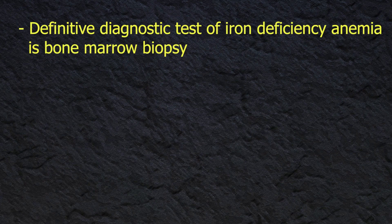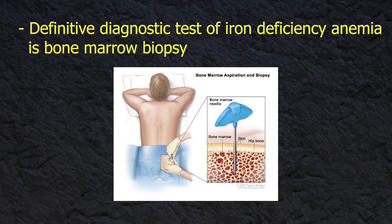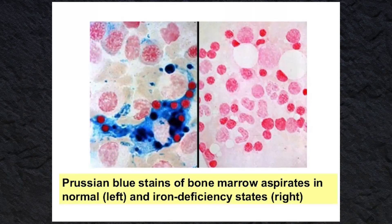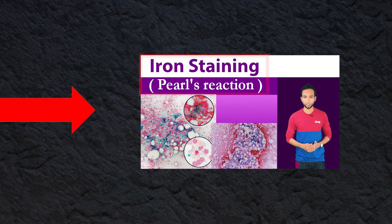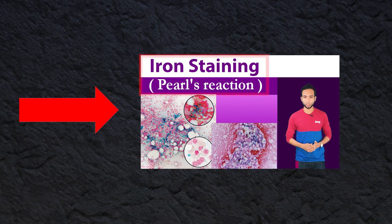A rarely used but definitive diagnostic test for iron deficiency anemia is bone marrow biopsy. Bone marrow iron is assessed under Prussian blue stain, showing depleted iron stores with micronormoblastic erythropoiesis. Check out our video on Prussian blue stain for more information on the procedure.